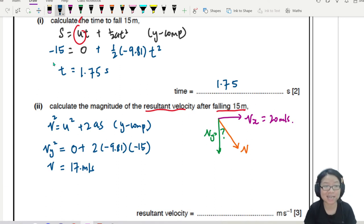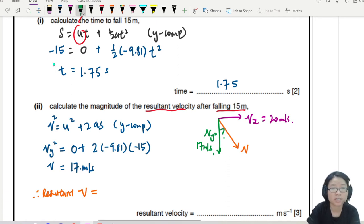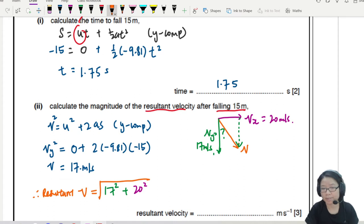So if you use V is U plus AT, you should get a close enough answer. So right now, I'm going to put this one inside here. VY is 17 meters per second. So hence, the resultant velocity. Hence, resultant V is equal to Pythagoras. Because I can bring this green arrow over and square this. This green arrow can fit here. So I can take 17 square plus 20 square and then I square root the whole thing. So straight Pythagoras triangles. So if I square root this, I'll get 26.2.